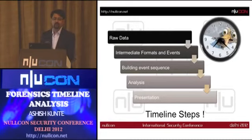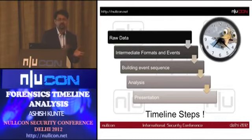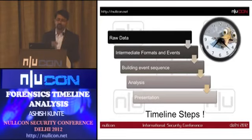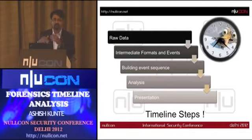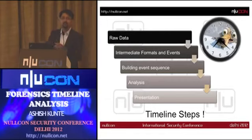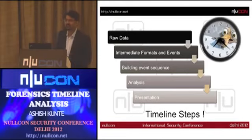From raw data, you create intermediate formats and events — those events can be anchor points. Using those formats, you build an event sequence: at a particular time, what happened; after that, what happened. When you look at events in sequence, you have context — a story, like the USB device case we'll discuss in detail.